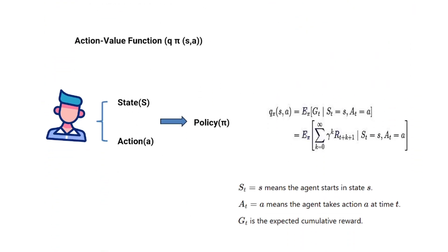Now let's take this one step further. The action value function evaluates how good it is for the agent to take a specific action A from state S, given that it will follow a particular policy afterward. The agent is in state S and decides to take action A; after taking that action, the agent follows its policy. The action value function tells the agent the expected return — or total reward — starting from S, taking action A, and following the policy. Mathematically, it's represented as Q-π(S, A).